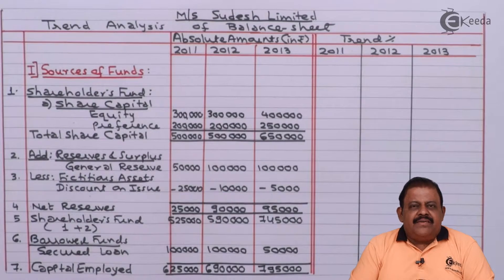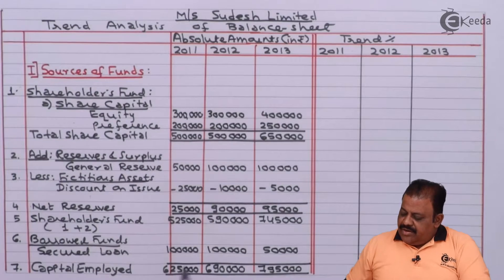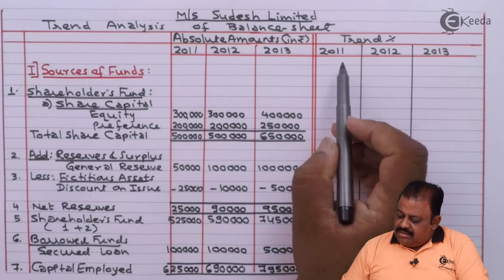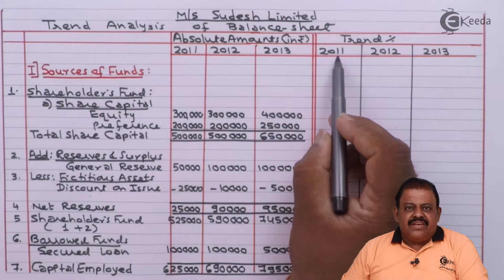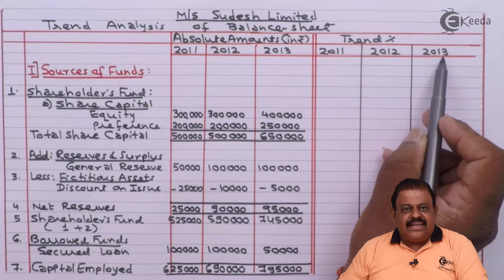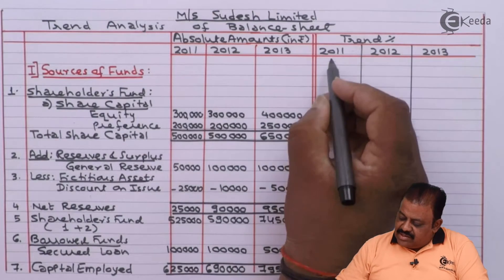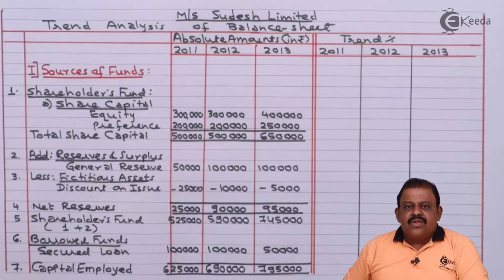We have prepared the vertical balance sheet. Now we will prepare the trend part of the statement. The base year will be 2011, and the current years will be 2012 and 2013. In the base year 2011, we assume all amounts equal to 100.